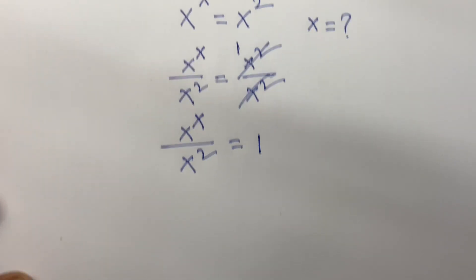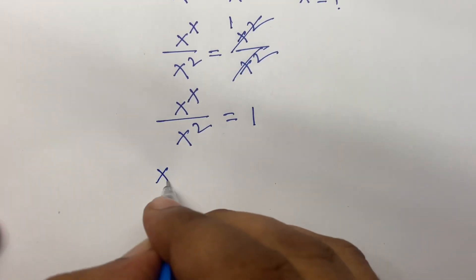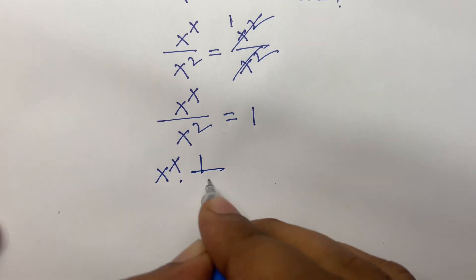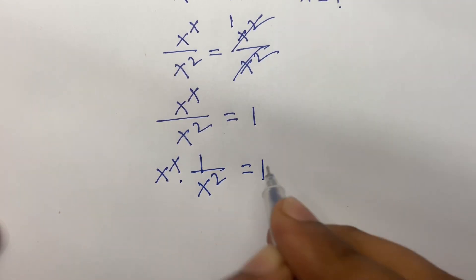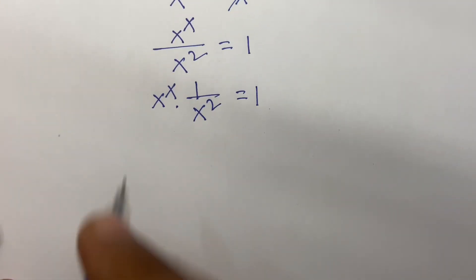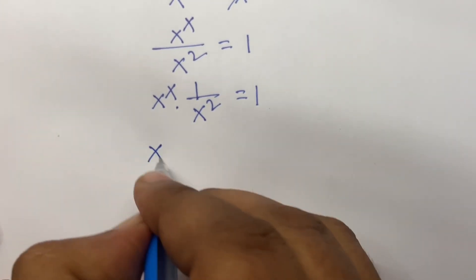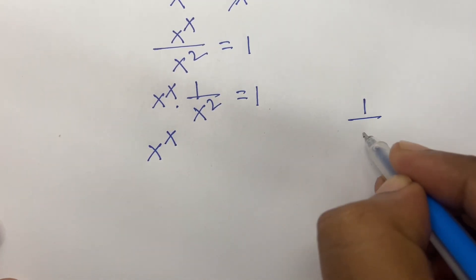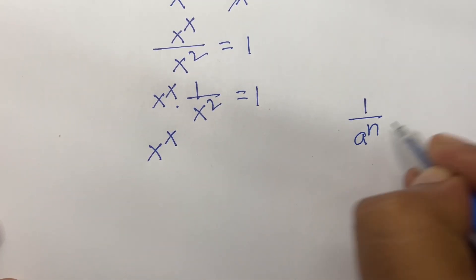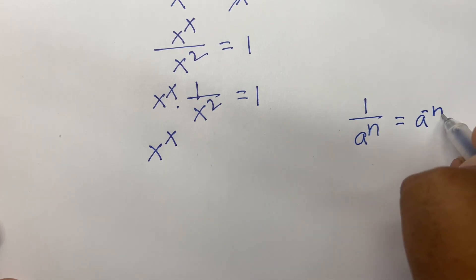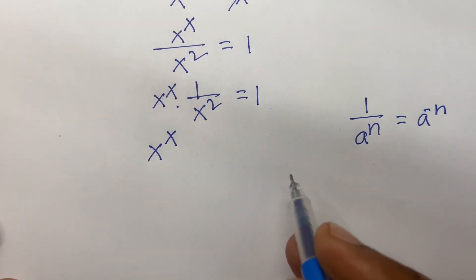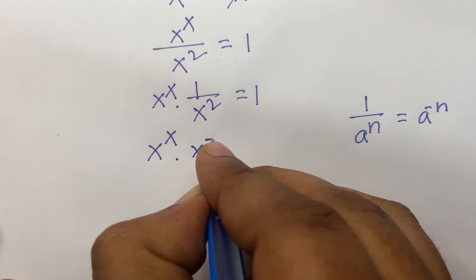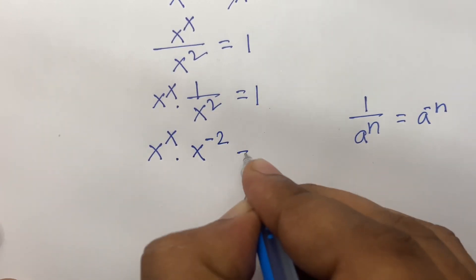Here is x to the power x times 1 over x squared equal to 1. We know that 1 over a to the power n equal to a to the power minus n. So I can say 1 over x squared equal to x to the power minus 2.